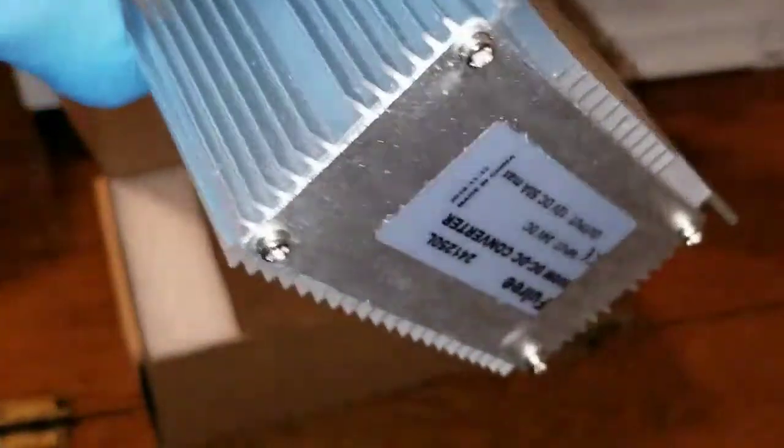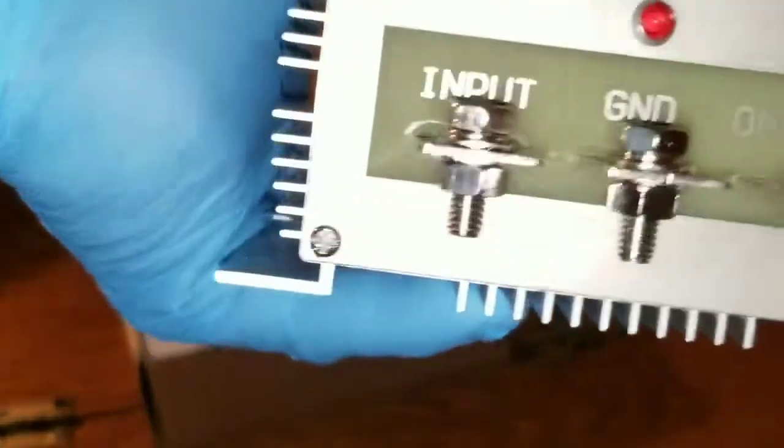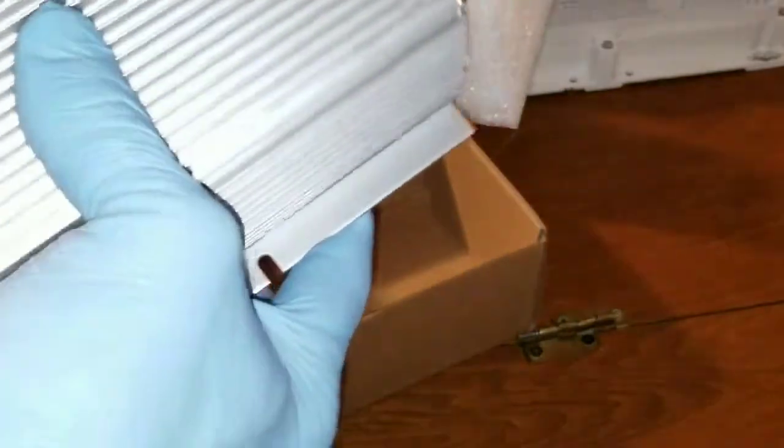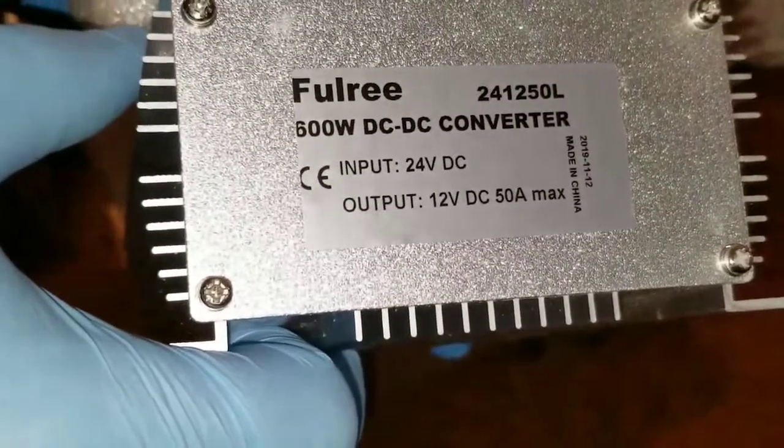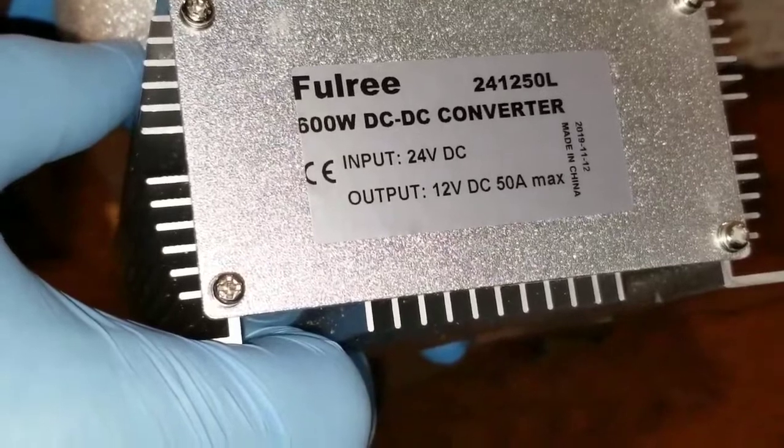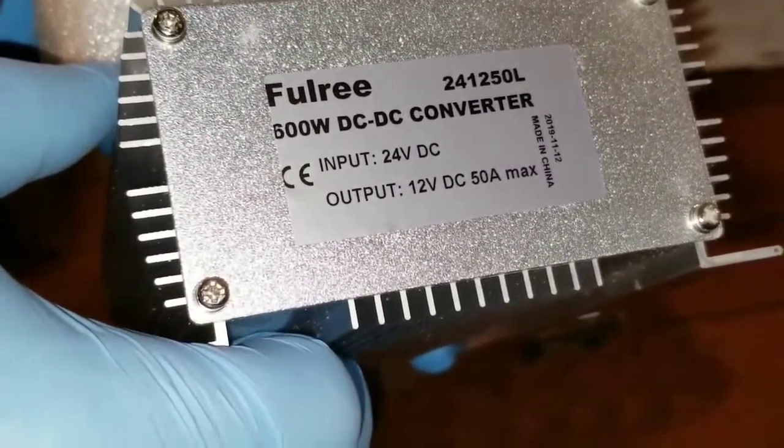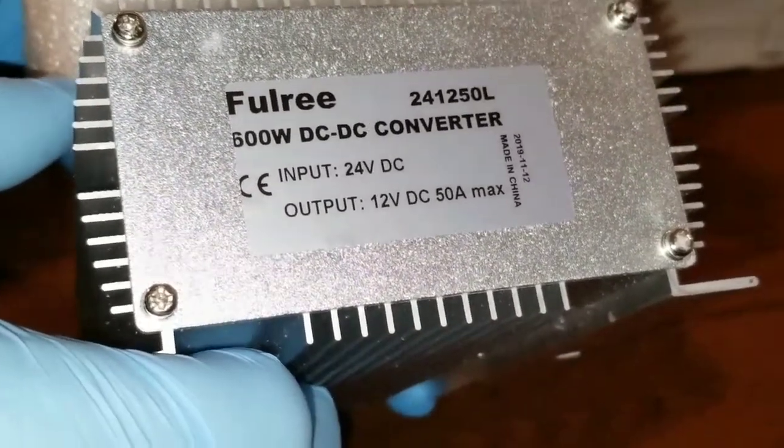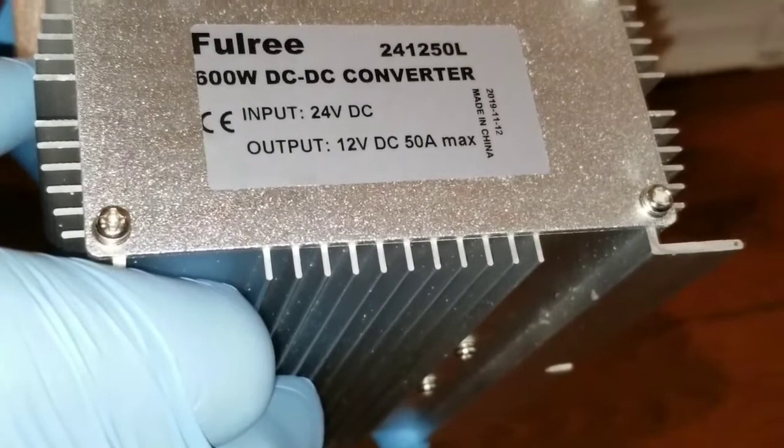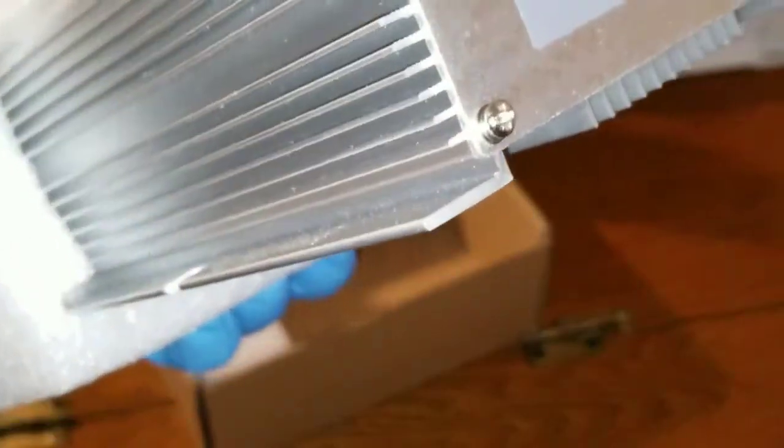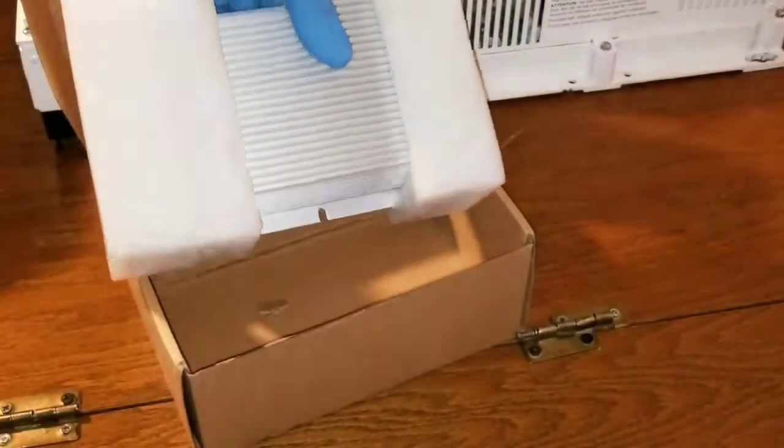Pretty awesome, right? So I just want to show you guys what I have here. I'm going to be using this with a different project. I'm showing you all this stuff because we're going to be doing some massive installs. If you're looking for this, it's Fulree 241250L, 50 amps max, you can search up to 750. I'm putting it away, we have to test this, but we're going to finish the 12 volt system first.